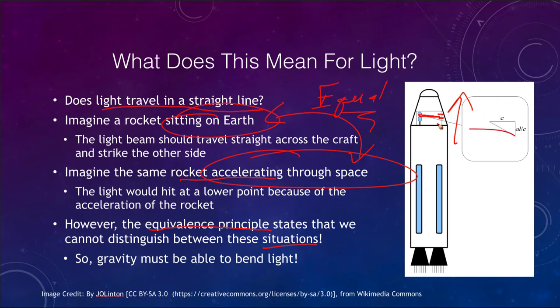However, the equivalence principle says that we cannot distinguish between these two situations. We should not be getting a difference whether the rocket is sitting on Earth or accelerating through space. These two should be according to Einstein equal, exactly the same thing is going to happen in either case. So by having two different occurrences, something is wrong. And what that means is that gravity must be able to bend light just as it bends or causes other objects to move. That is quite different than what Newton told us.